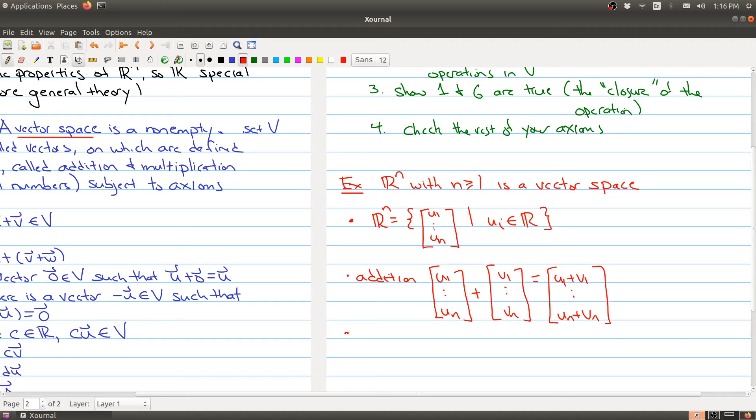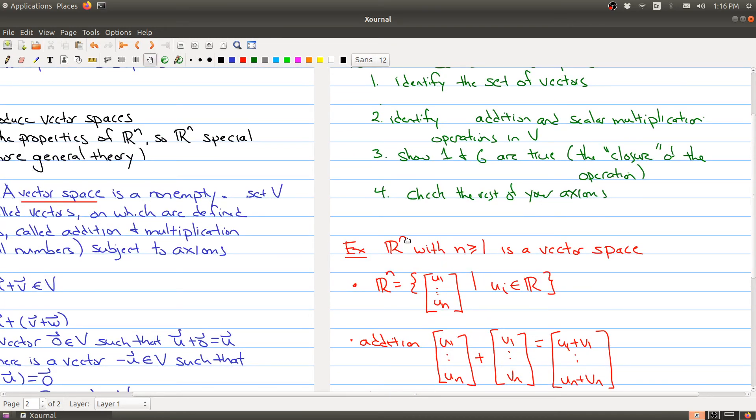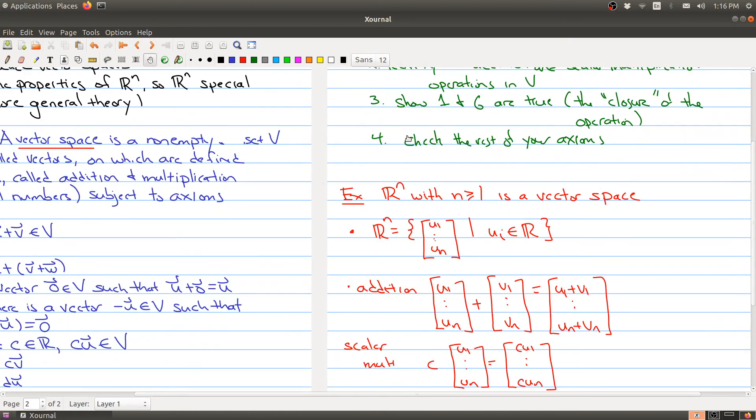And we have our scalar multiplication is going to be the same as what we had before, u1 up to un. We scale our vector by multiplying every entry by the constant c. So those are my two operations on my set. So this is my set. These are my elements. This is how I'm combining them.